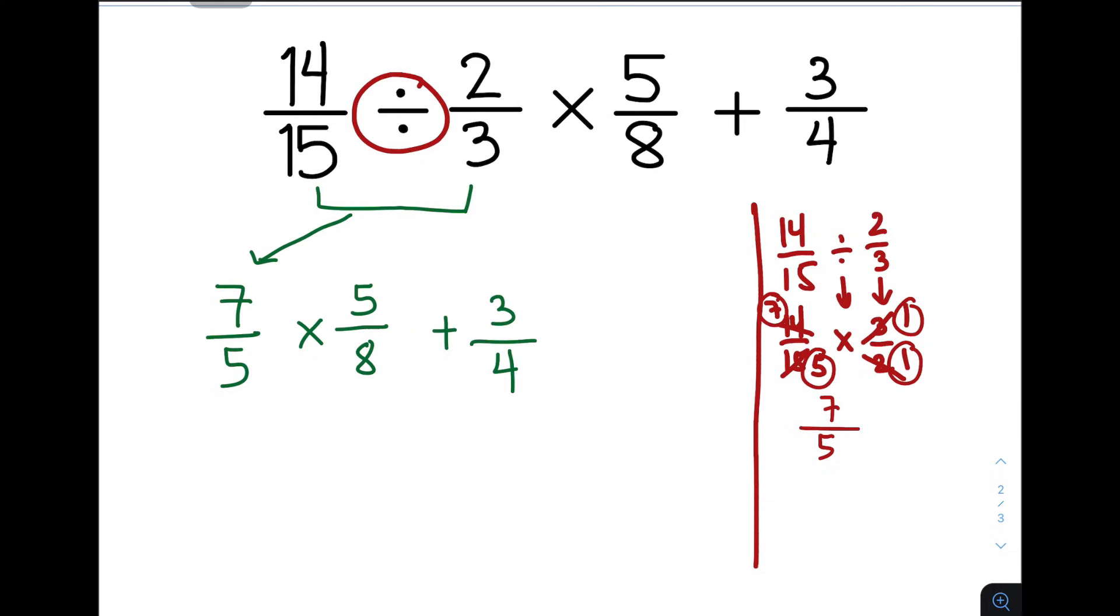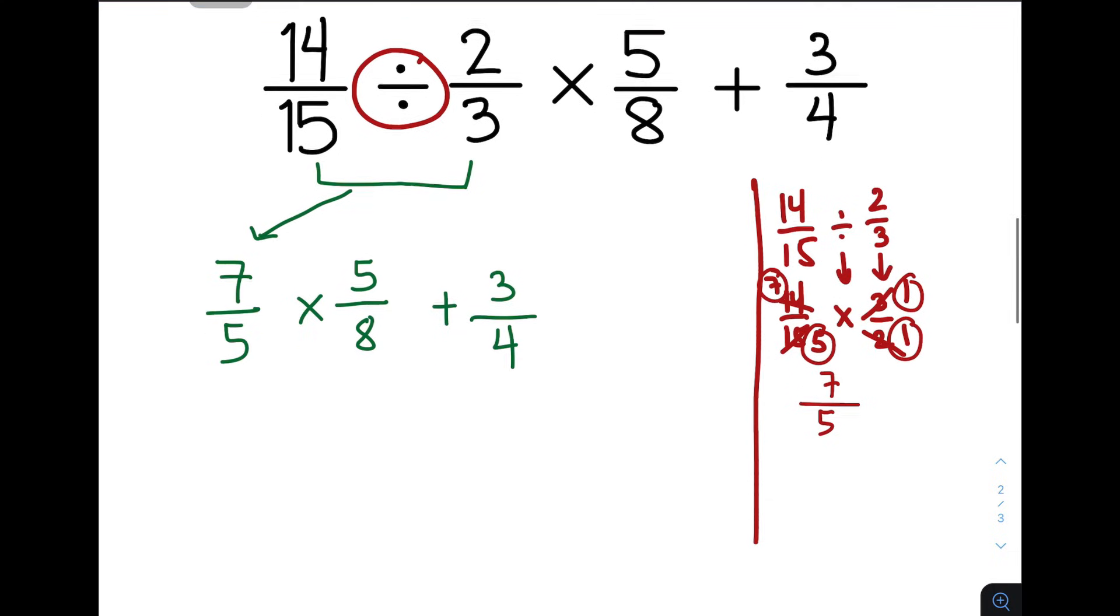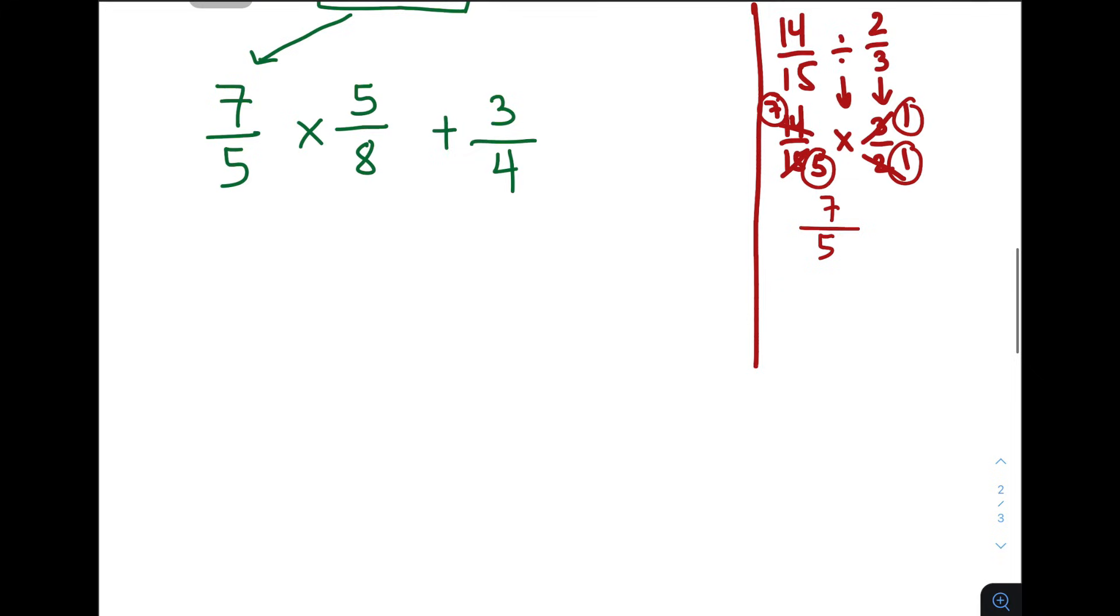So what will happen is that continue natin, guys. Ito tayo ngayon. You will multiply this. And as you can see, we can eliminate this part. We can eliminate this and eliminate this magiging 1 and 1. Tapos, multiply mo lang tong dalawang to. 7 times 1, that is 7 over 1 times 8, that will be 8, plus 3 over 4.